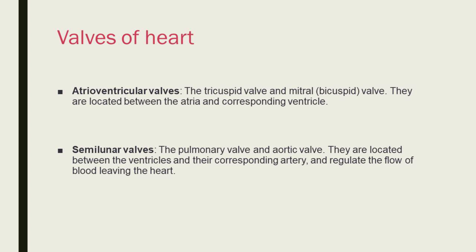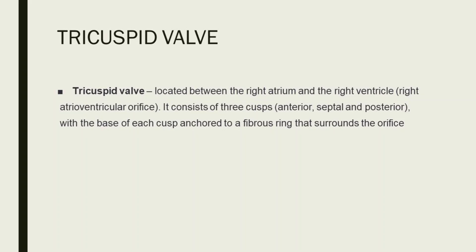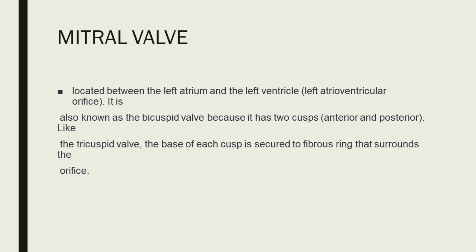The atrioventricular valves are located between the atria and ventricles. They close during the start of ventricular contraction, producing the first heart sound. The tricuspid valve is located between the right atrium and the right ventricle. As you can see in the figure, it consists of three cusps — anterior, septal, and posterior — with the base of each cusp anchored to the fibrous ring that surrounds the orifice.